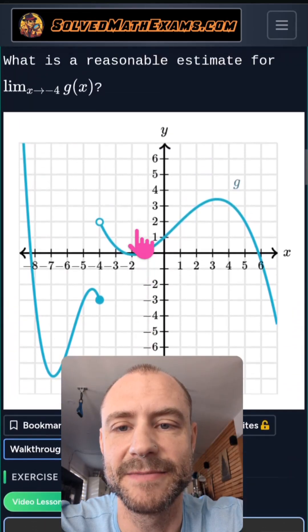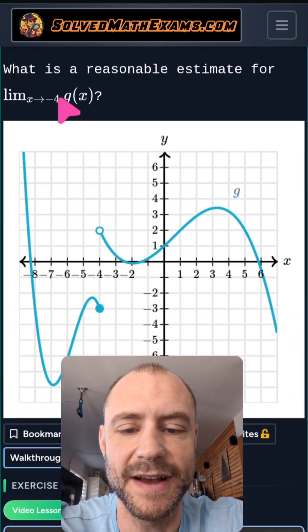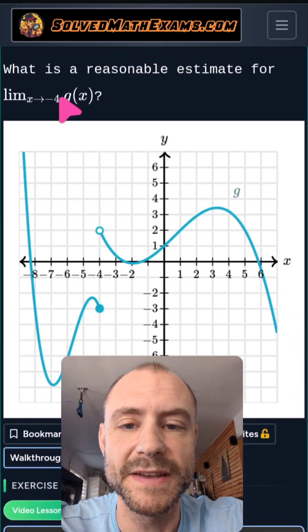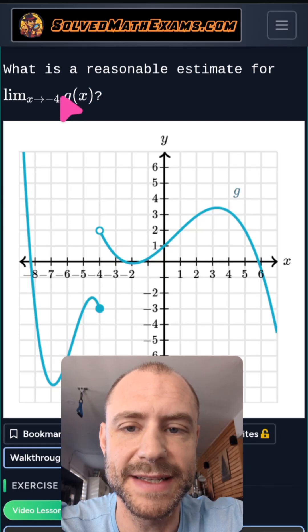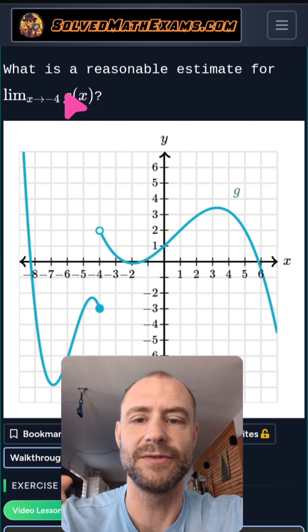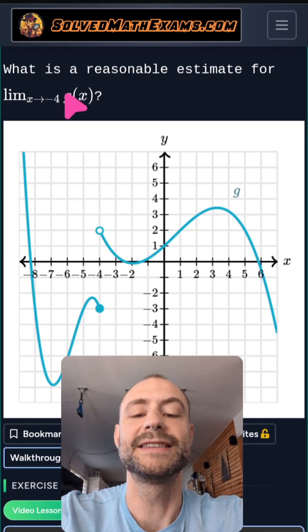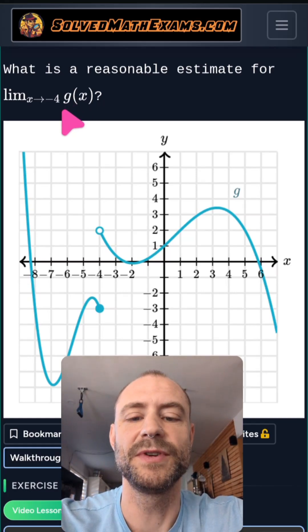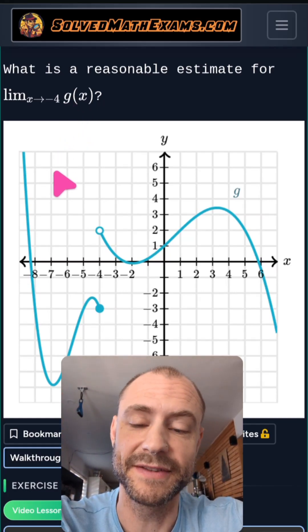Because it doesn't specify left or right here, usually you can see a little minus sign which would mean from the left, or a plus sign which would mean from the right. Since we don't see any of those, you have to look at both - you have to look at the left hand limit and the right hand limit.